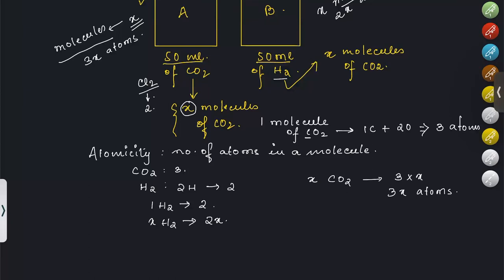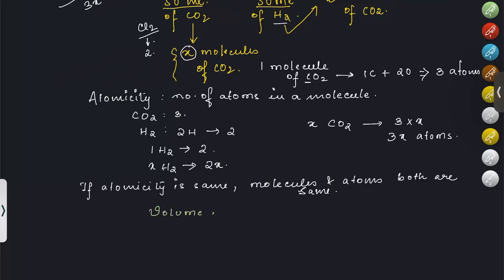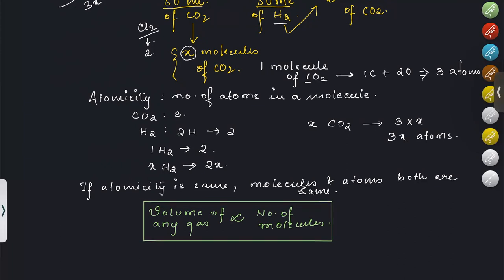If two gases have the same atomicity — for example, Cl₂ and H₂ both have atomicity 2 — then equal volumes will contain equal numbers of both molecules and atoms. If atomicity differs, the atom count will vary. Therefore, the volume of any gas is directly proportional to the number of molecules present. This concludes Avogadro's Law.